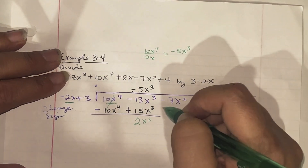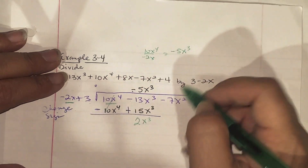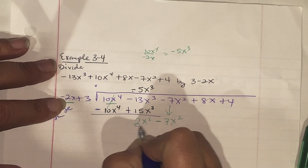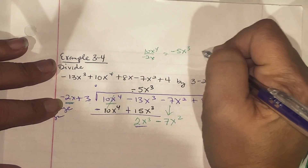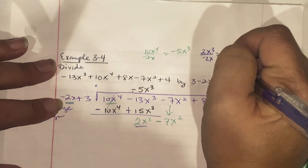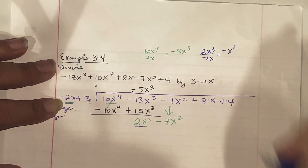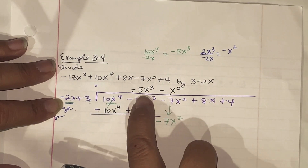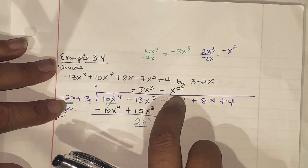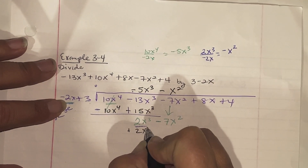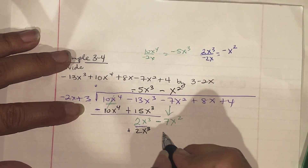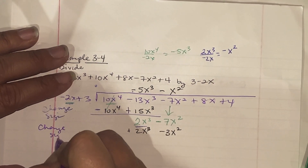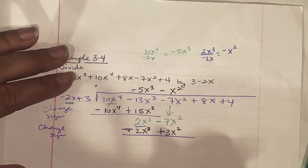Slide negative 7x squared down. Now we repeat: divide 2x cubed by negative 2x, which gives negative x squared. Write negative x squared on top. Multiply: negative x squared times negative 2 gives positive 2x cubed, and negative x squared times 3 gives negative 3x squared. Change the signs — subtract — so 2x cubed minus 2x cubed cancels out.